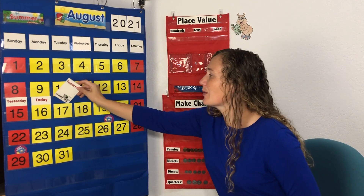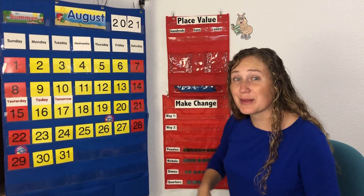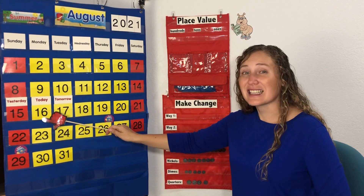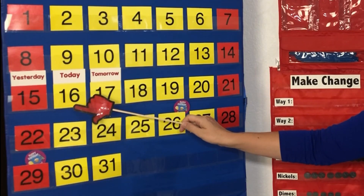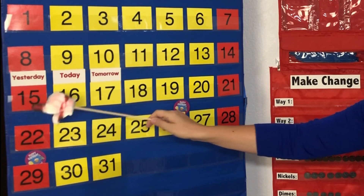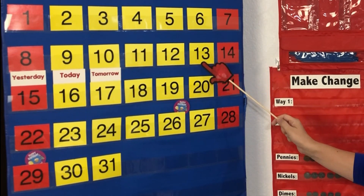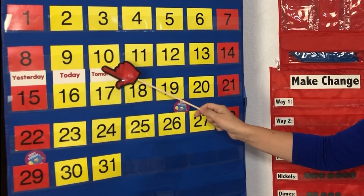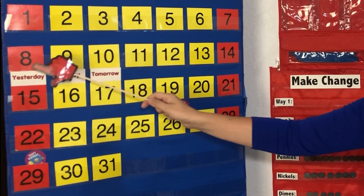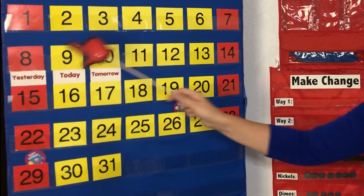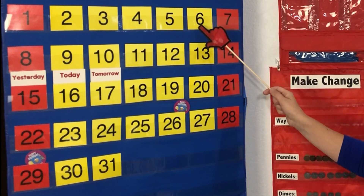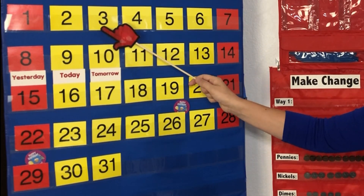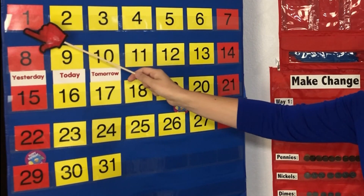Let's count down from 16 together. Starting at 16: 16, 15, 14, 13, 12, 11, 10, 9, 8, 7, 6, 5, 4, 3, 2, 1.